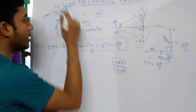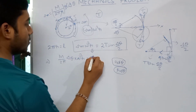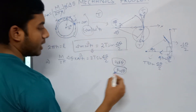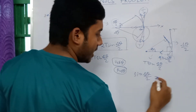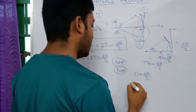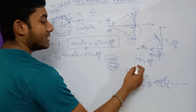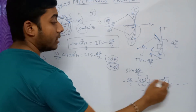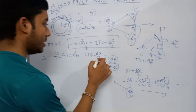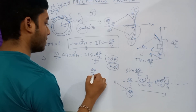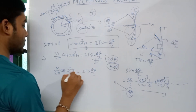Substituting δm into the equation: (m/2π)·δθ·ω²r = 2T·sin(δθ/2). Since δθ is very small, sin(δθ/2) ≈ δθ/2 by the small angle approximation, dropping higher order terms. Substituting: (m/2π)·δθ·ω²r = 2T·(δθ/2) = T·δθ.